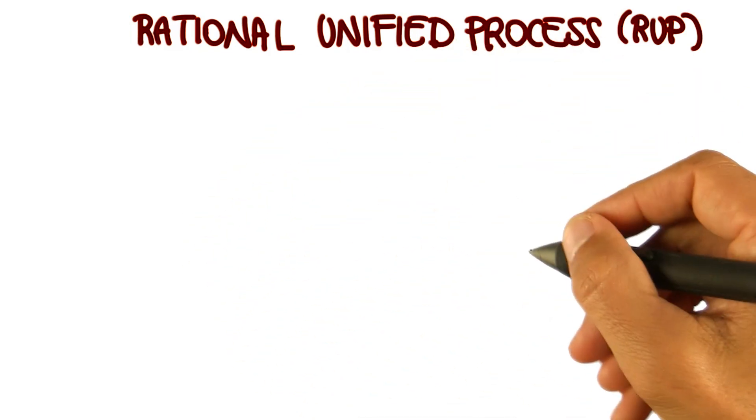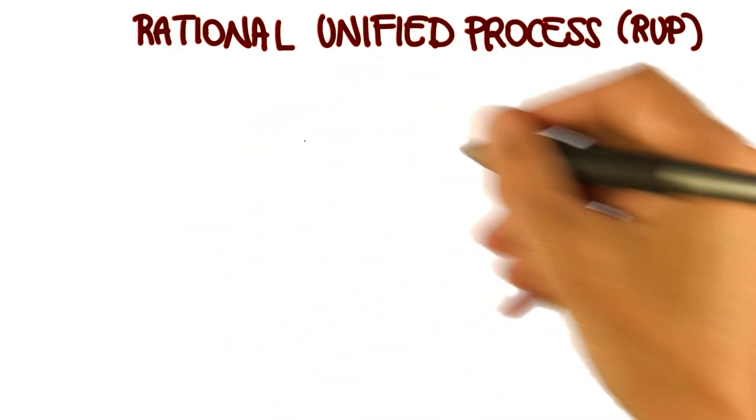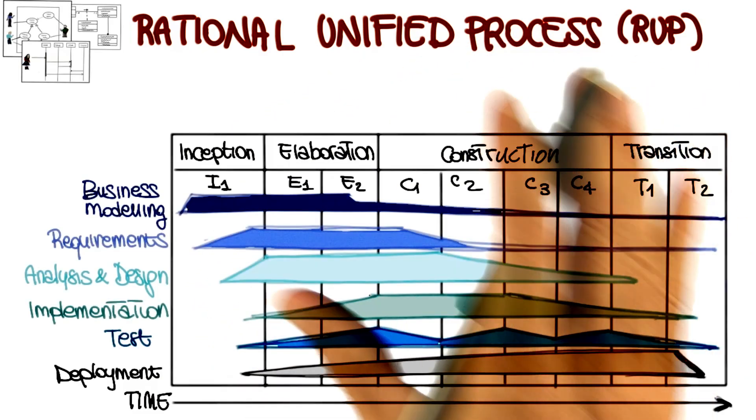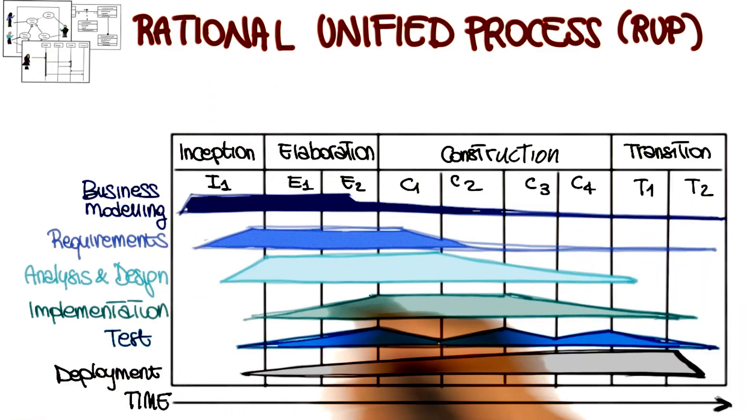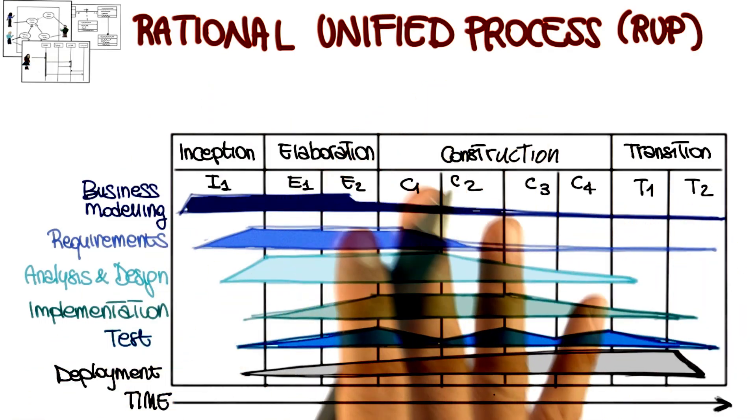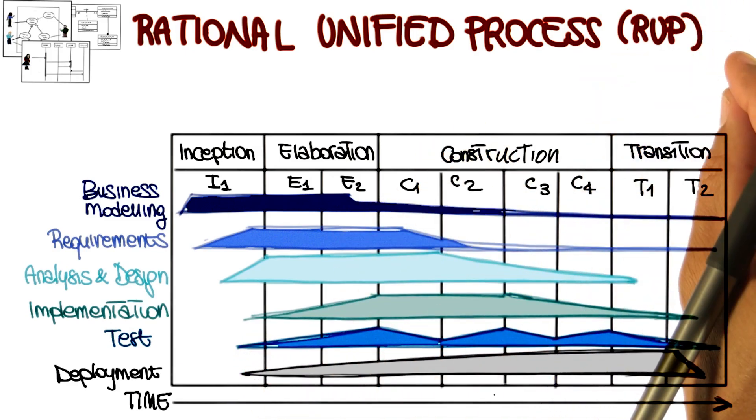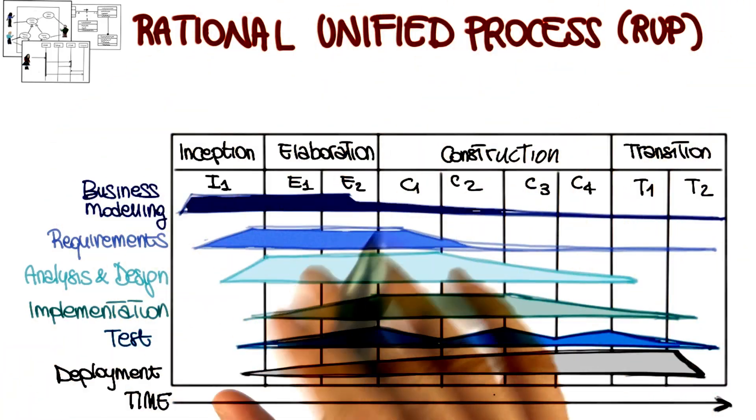RUP works in an iterative way, which means that it performs different iterations. And at each iteration, it performs four phases. So what I'm showing you here is a high level view of the process, and I don't want you to focus on all the different details, because we will discuss these details later on in a lesson that is actually dedicated to RUP. What I want to give you now is just the gist of how this works.